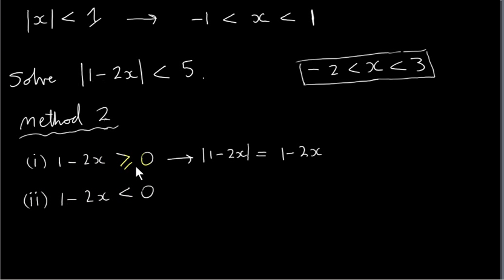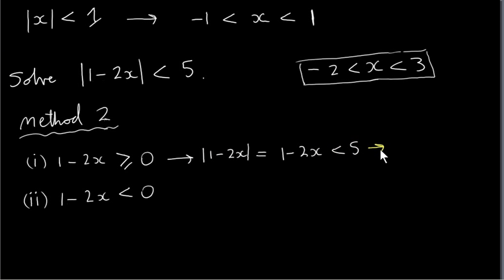If we take the first case, the modulus of one minus two x is just one minus two x — we can drop the modulus lines because we're taking the modulus of something positive or zero, so we don't change it. We're then just solving the inequality one minus two x less than five. Solving this gives minus two x less than four, from which we get x greater than minus two, dividing across by minus two and reversing the inequality.